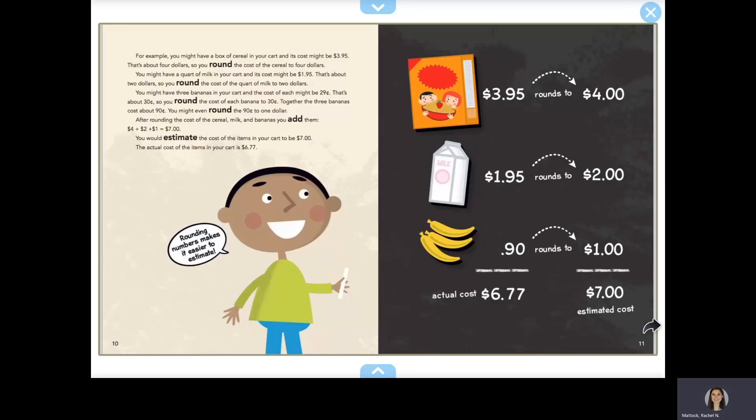Together, the three bananas cost about $0.99. You might even round that to $1.00. After rounding the cost of the cereal, milk, and bananas, you add the items. $4.00 plus $2.00 plus $1.00 equals $7.00. The actual cost of the items in your cart is $6.77.